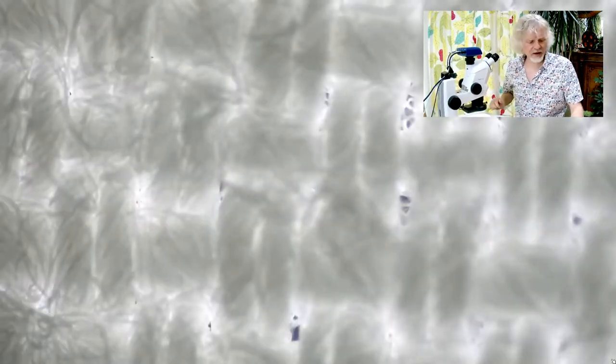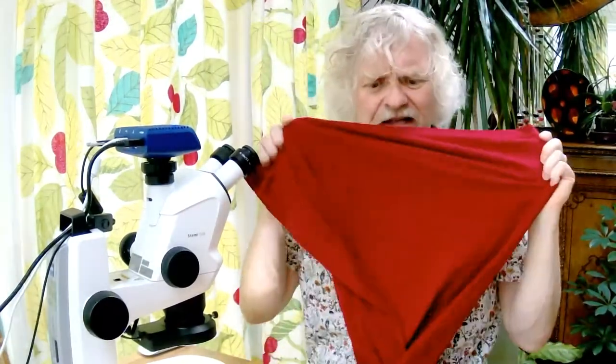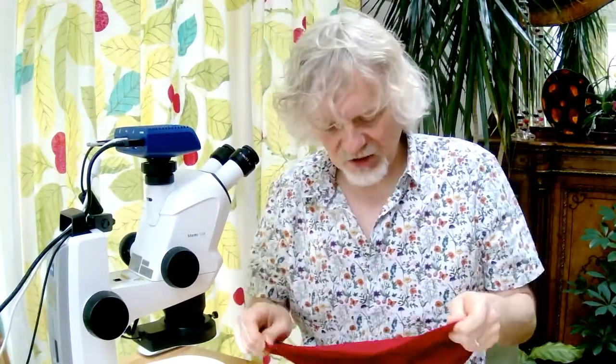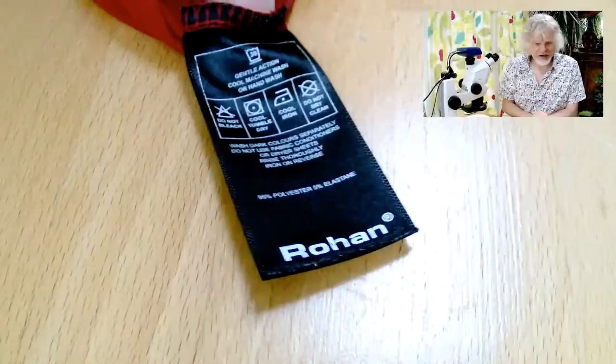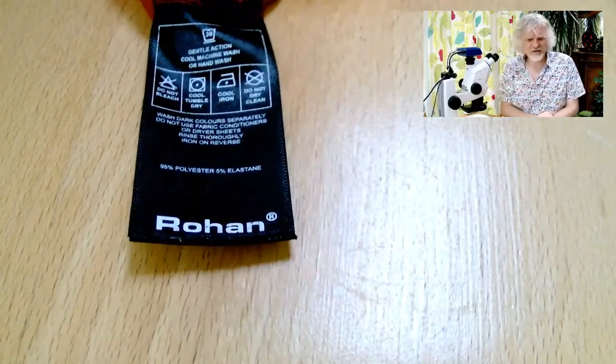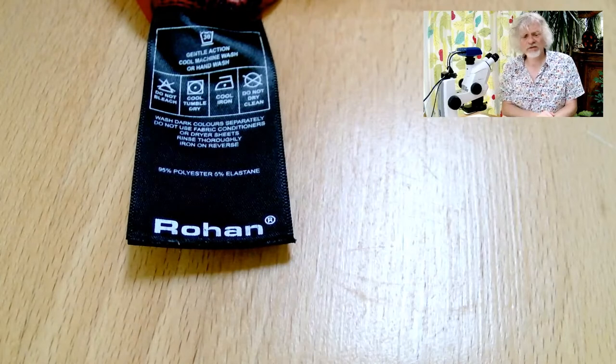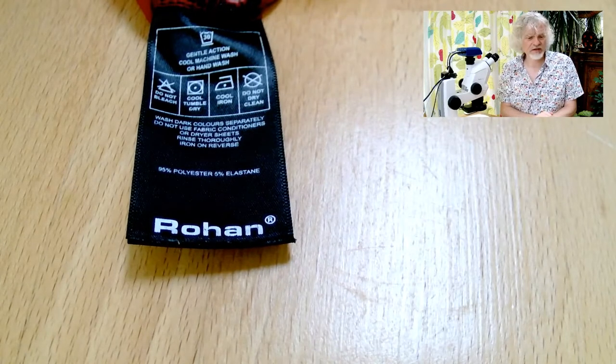But what about a less natural fabric? What I've got here is a t-shirt of mine, I like to wear red. This t-shirt is made from entirely unnatural fibres and if I can find the label here it is. It's a t-shirt from Rohan, I'm not sponsored by Rohan, I'd love to be sponsored by Rohan. Rohan if you want to send me lots of free stuff I would be delighted.